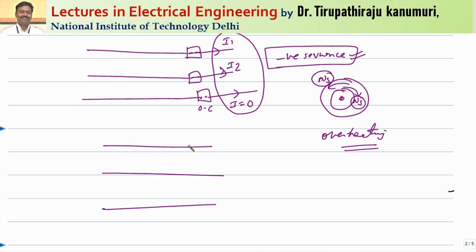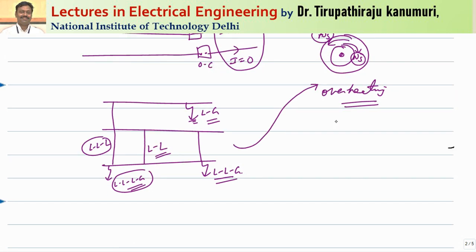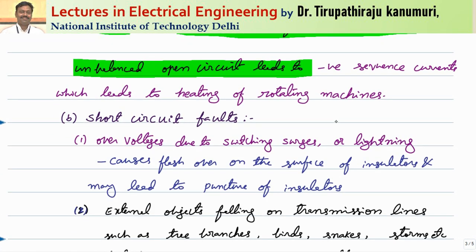For short circuit faults, taking three conductors: a line to ground fault is when one conductor is connected to ground. A line to line fault means two adjacent conductors are connected together. A line to line to ground fault is two adjacent conductors connected together and to ground. A triple line fault means all three phases are short-circuited, and triple line to ground means all three are also connected to ground. Triple line and triple line to ground faults produce balanced currents even though the magnitude is high.